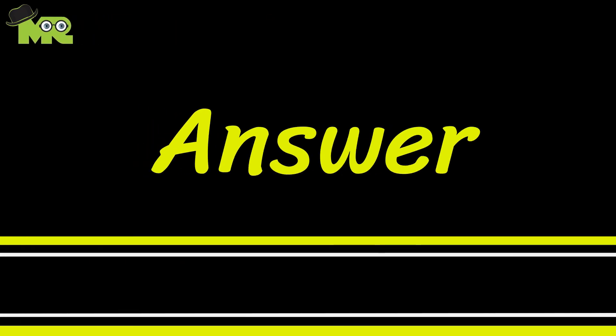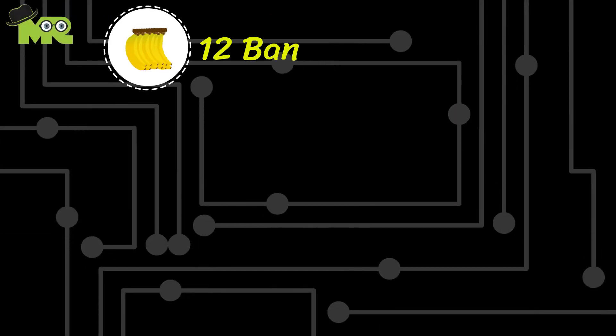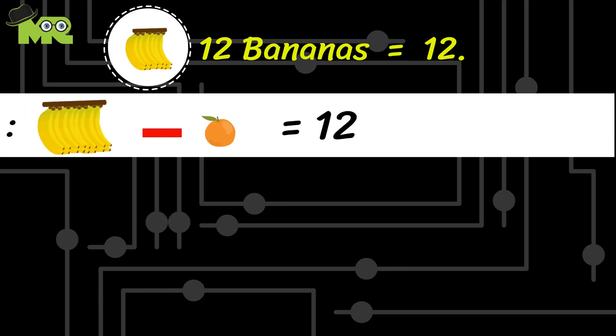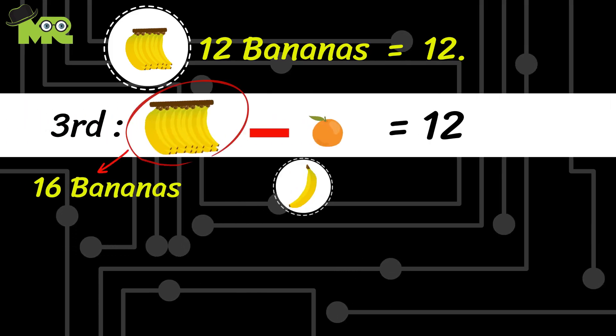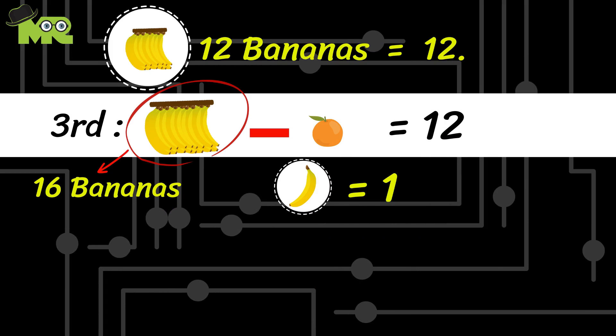Let's see the answer. A hand of 12 bananas are equal to 12, because in the third equation we showed you an image of 16 bananas. So one banana is equal to 1.